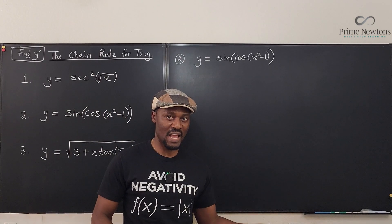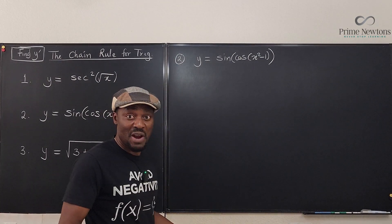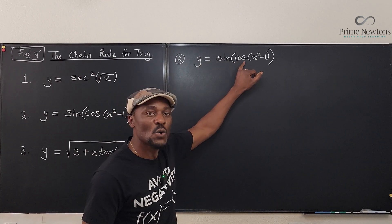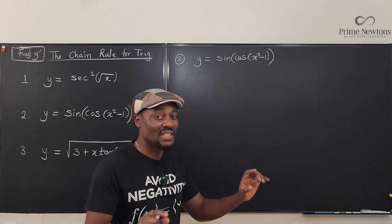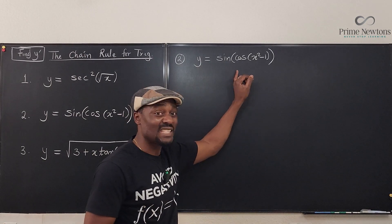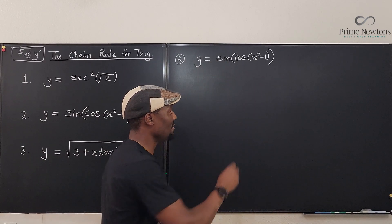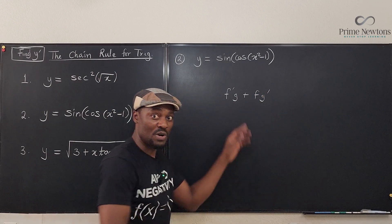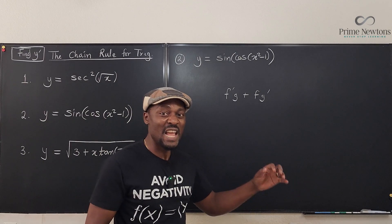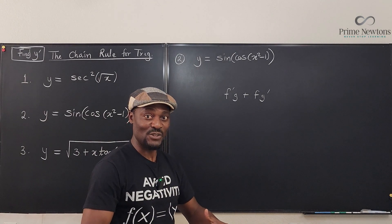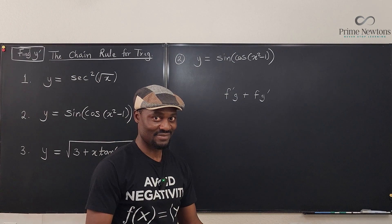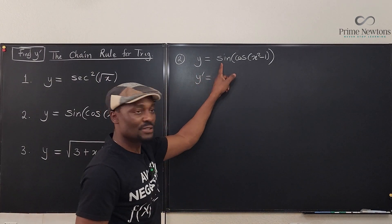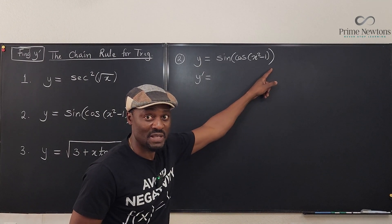This second one is similar. It's still a trig function. You don't need to rewrite anything because nothing is raised to any power. But look — the argument of sine is cosine of x squared minus one. It is not a product. Do not treat this as sine something times cosine something. Do not try to use the product rule f prime g plus f g prime. This does not work here because cosine is inside of sine. So it is the chain rule you must use.